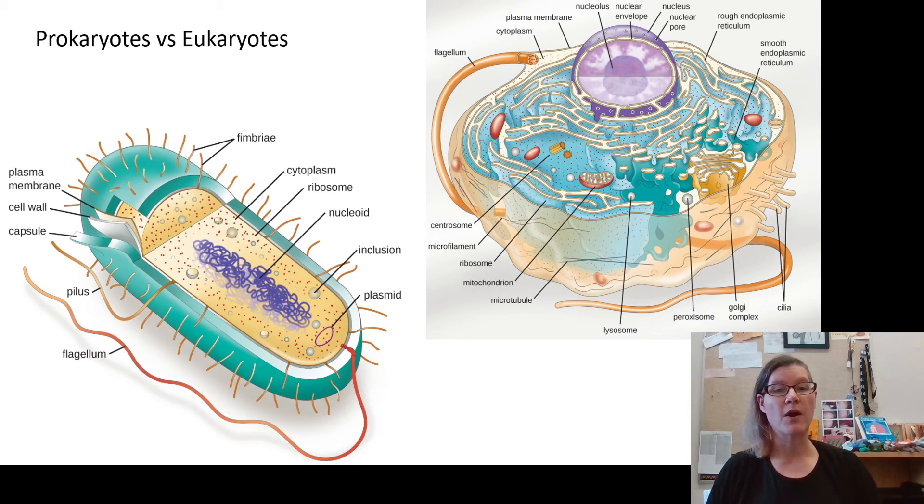Now, the biggest part of prokaryote versus eukaryote is the idea that prokaryotic cells do not have a nucleus, or more specifically, any membrane-bound organelles. Pro meaning before the karyote, the kernel or nucleus, and eu meaning true nucleus. Here's our nucleus, and here you can see there's not.